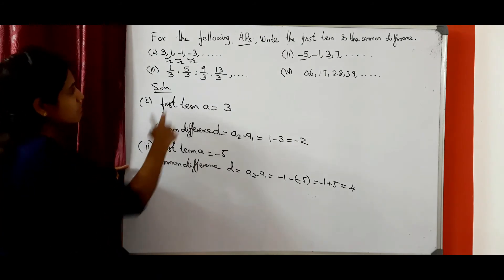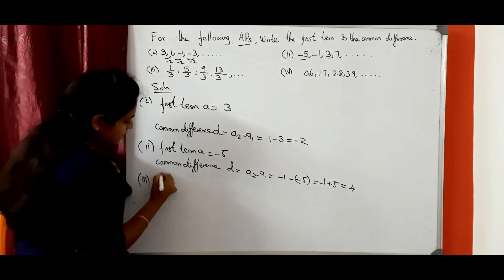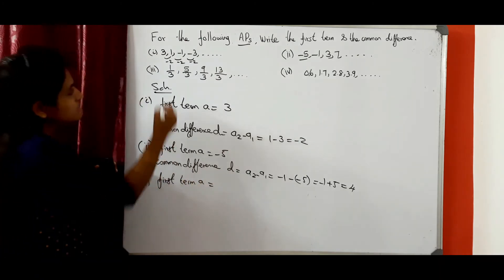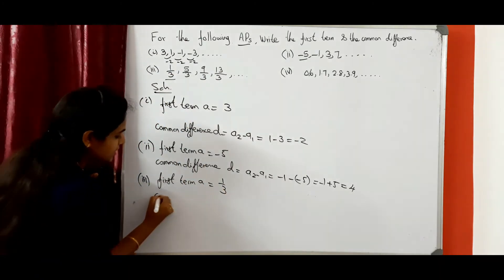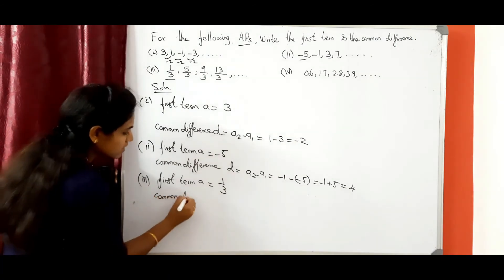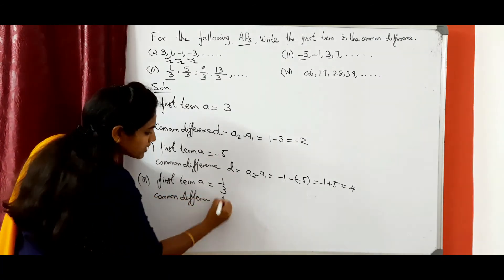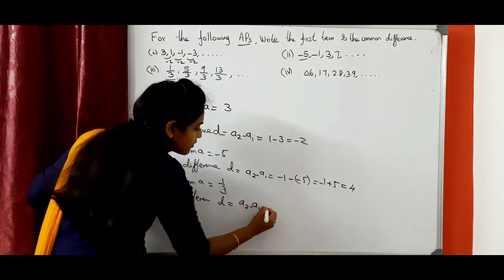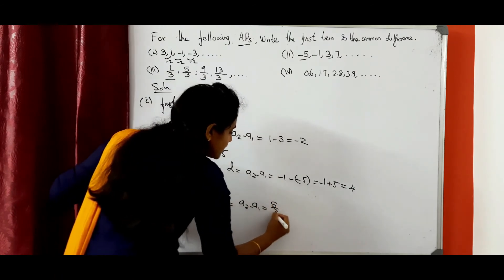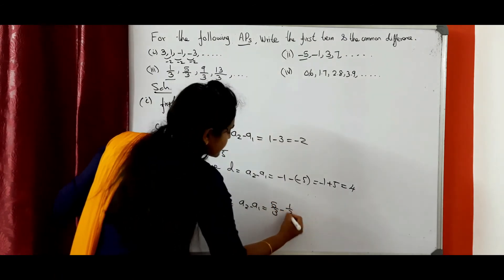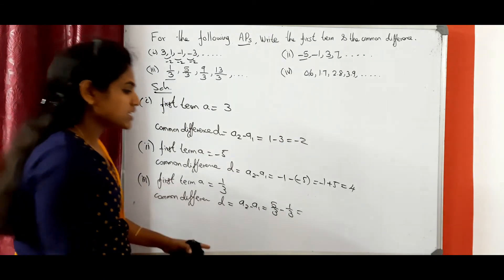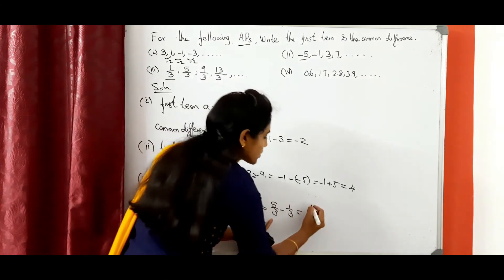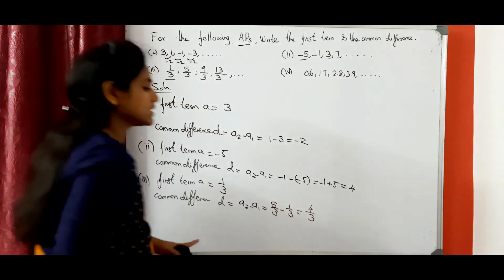Third question: first term A equals 1/3. Common difference D equals a2 minus a1: 5/3 minus 1/3. Since the denominators are the same, we do the numerators: 5 minus 1 equals 4. So 4/3 is the common difference.